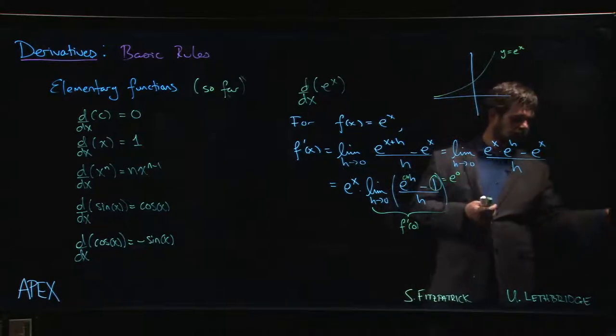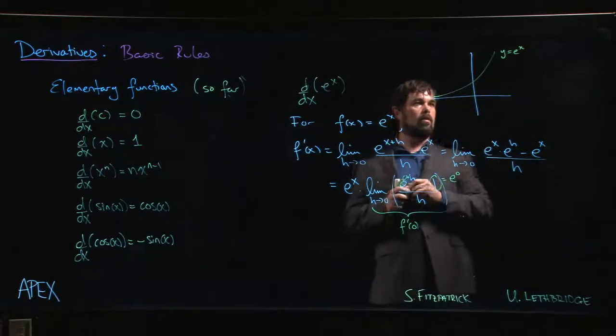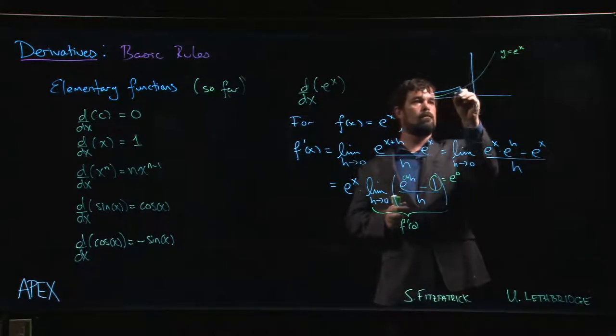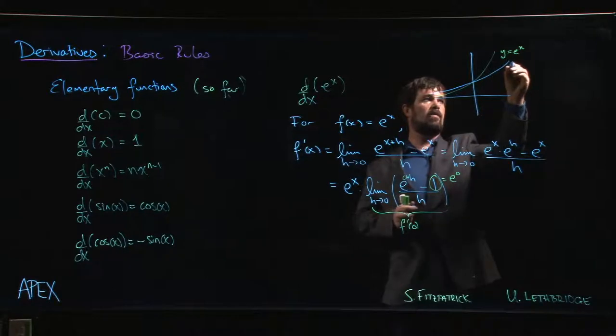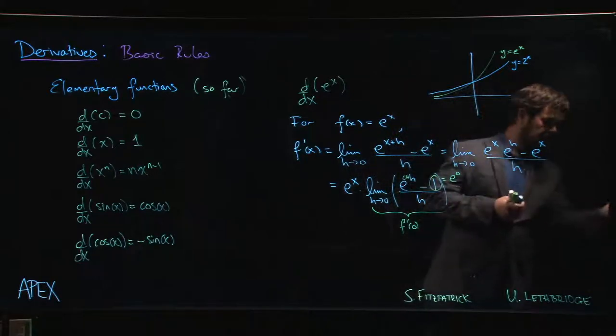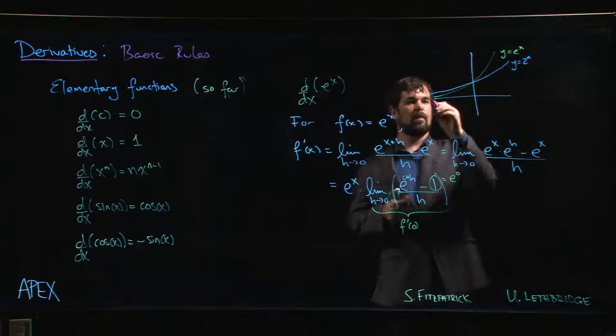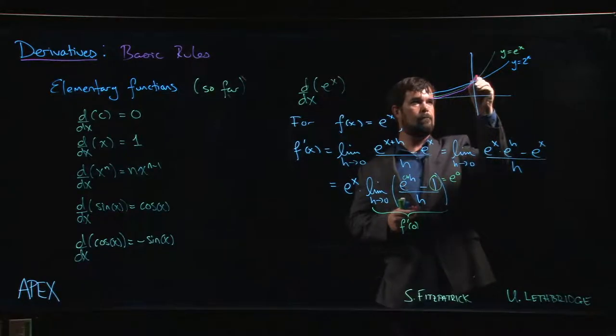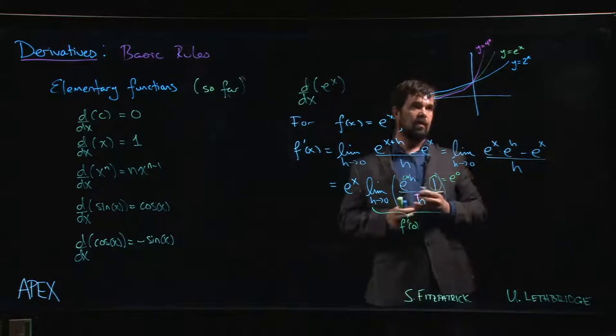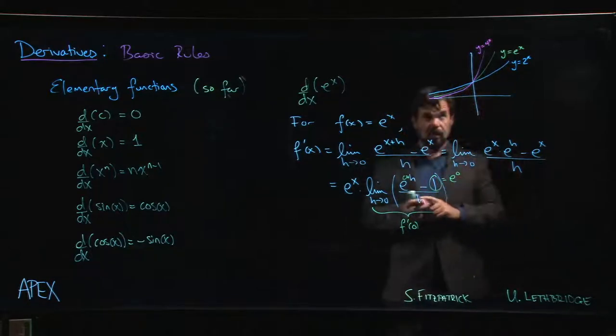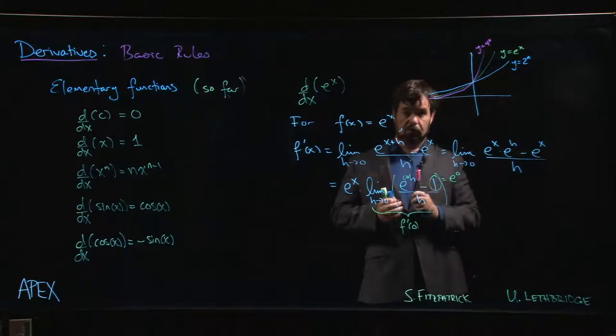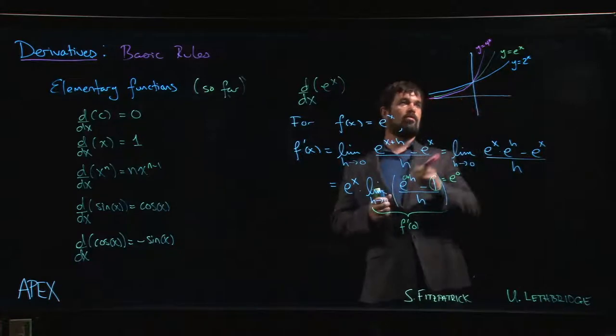And we know that depending on the size of the base, right, for a smaller base, we might have something that goes like this. Maybe that's 2 to the x. For a larger base, maybe you have something like this. Y equals 4 to the x. And one of the things that you'll notice is that the larger the base is, the steeper the slope is when you cross the y-axis, right? At that y-intercept, right, the slope changes.